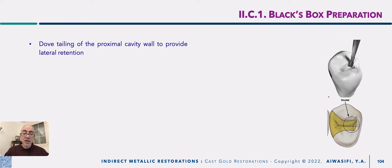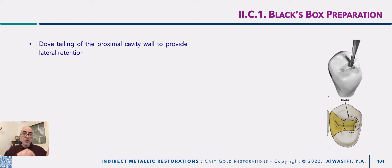Extend the cavity margins to a self-cleansable area using this tapered fissure bur, not inverted cone bur, to involve all pits and fissures. Then comes the dovetailing of the proximal wall to provide lateral retention. If you remember in fundamentals of tooth preparation, we mentioned that this dovetail is either an outline form or extension for retention. It differs according to the dimensions of the triangular fossa. In molars, the dimensions of the triangular fossa is wide buccolingually, so when you extend your cavity to involve all stagnation areas it will be cut automatically in a form of dovetailing.